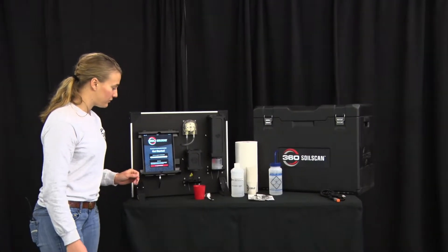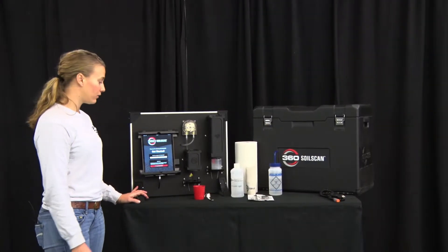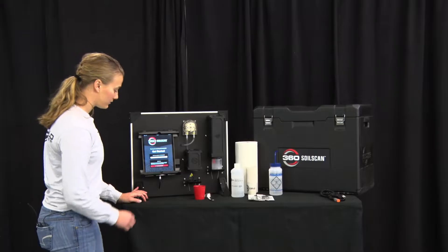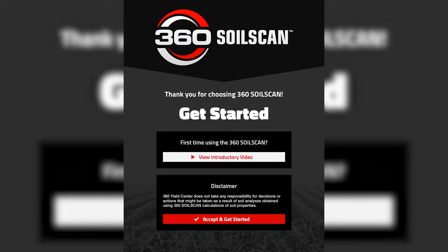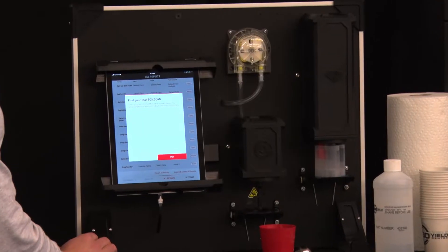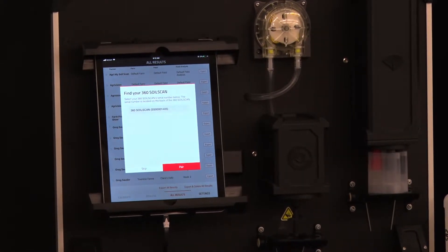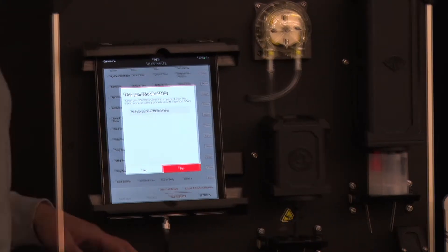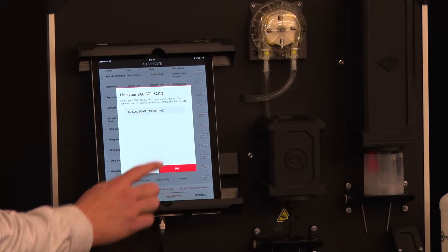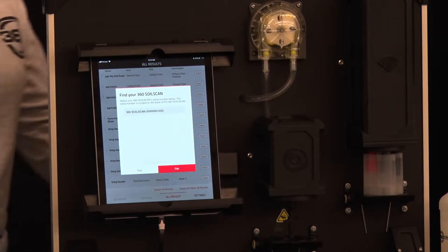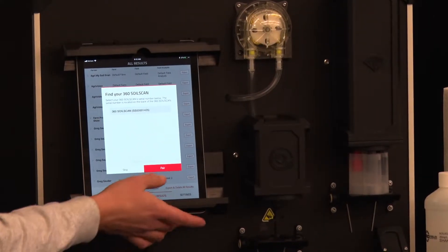While the sensors are soaking we're going to go ahead and pair our iPad with the SoilScan. So when you open the app this is the first page you'll see. Select accept and get started. And wait while your iPad finds the SoilScan. The serial number that you see on the app here is on the back of the SoilScan. Simply select pair.